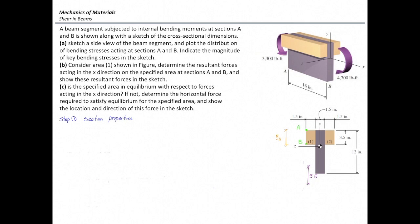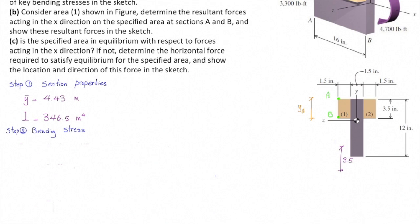We have discussed these section properties before, so I'll just present the values: Y-bar is 4.43 inches from the top of the section, and the moment of inertia is 346.5 for the entire section.